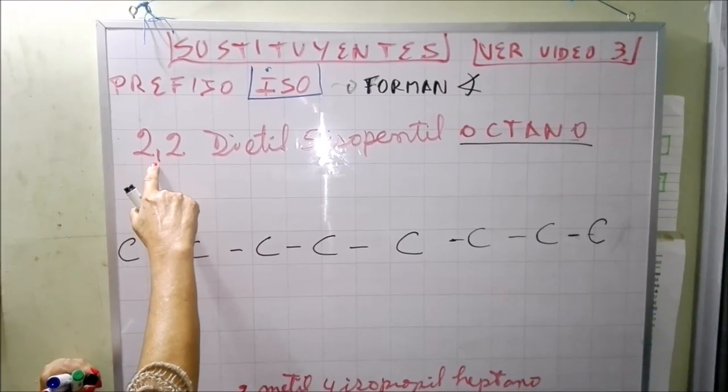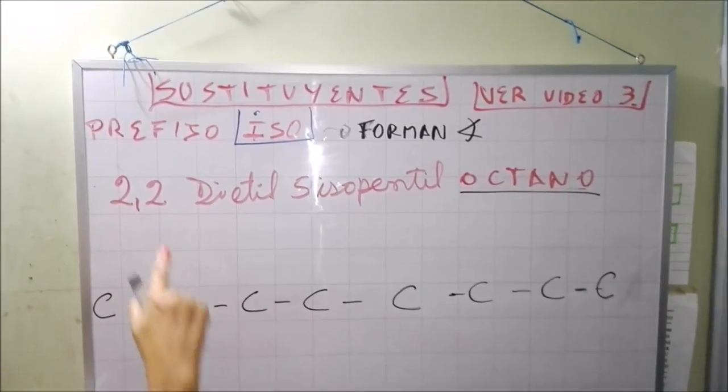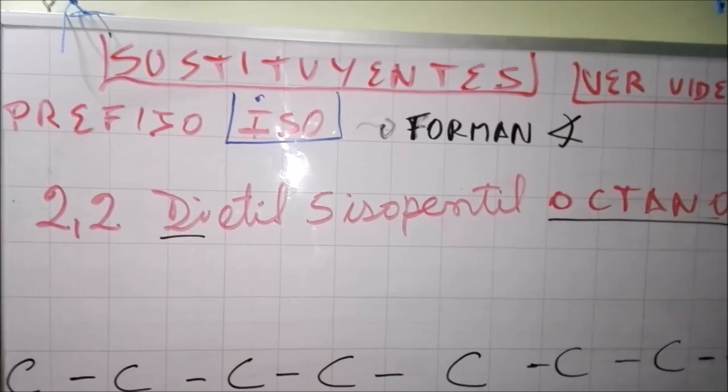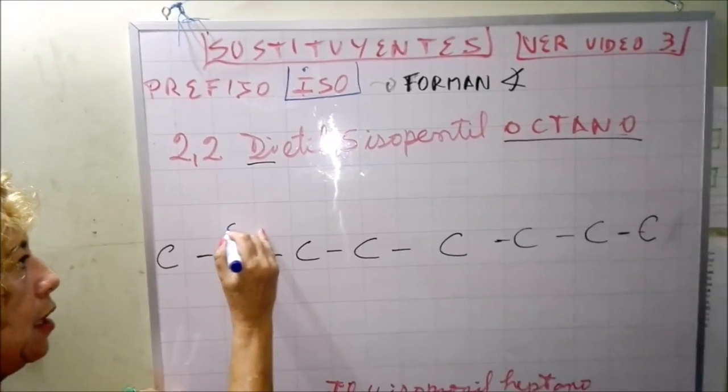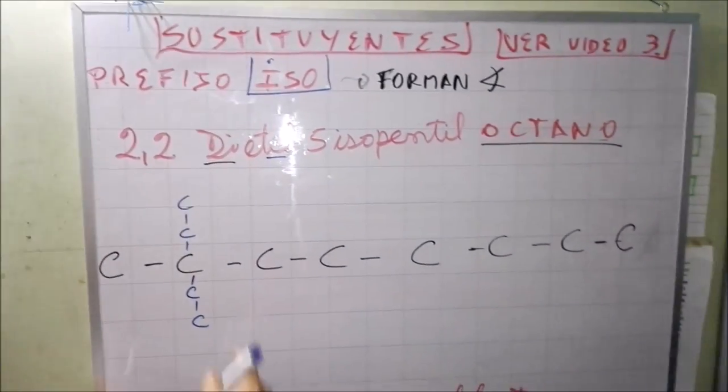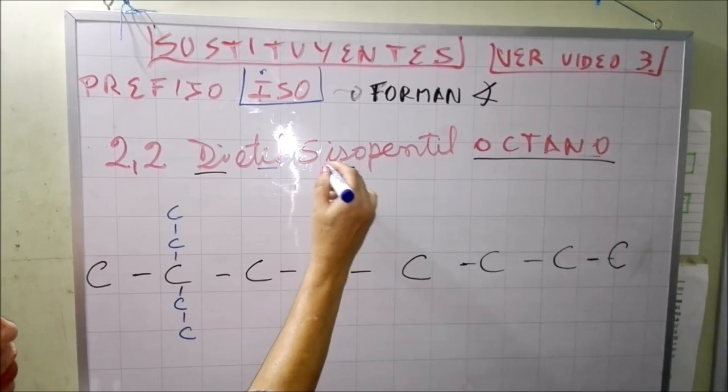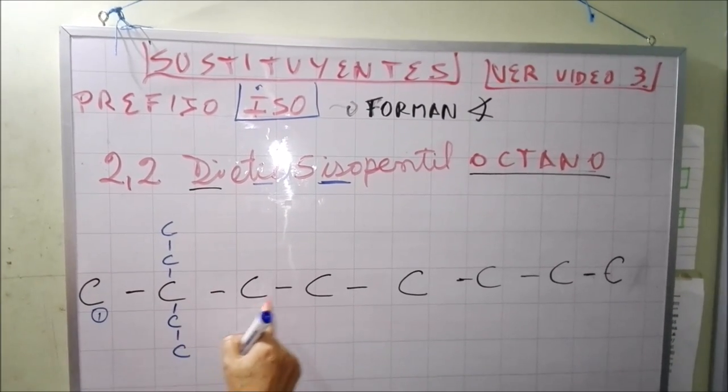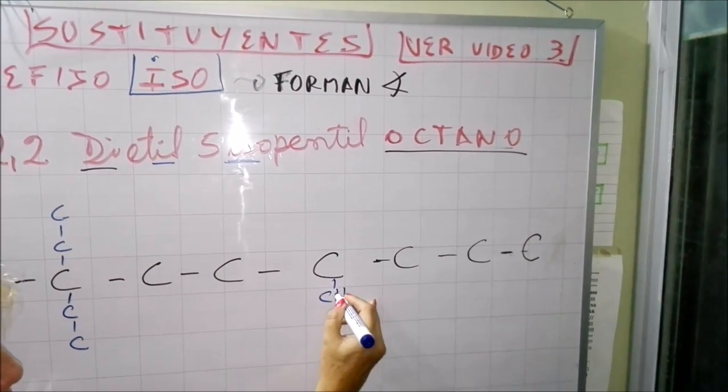Entonces, me dice en ubicación esto que te dice 2, 2, 5, es la ubicación del carbono. Me dice ubicación 2,2, significa que en el mismo carbono 2, dice dietil, o sea, que coloque 2 etil. Etil arriba, 1 y 2. Etil viene de etano, cuando se llama como sustituyente, hace la terminación il. Entonces, ubicación 2,2 etil y me dice, en ubicación 5 coloque el isopentil. Cuento 1, 2, 3, 4, 5. Este es el carbono 5. En carbono 5 dice que coloque un pentil.